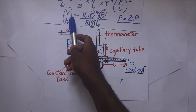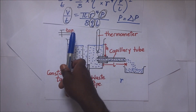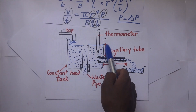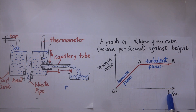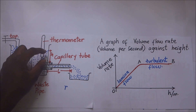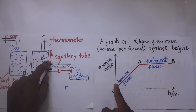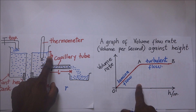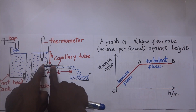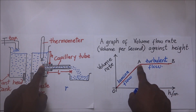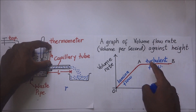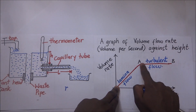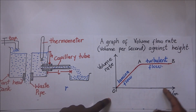After collecting V/T for different values of H, you plot a graph of volume flow rate against height H — that is, V/T on the y-axis against H on the x-axis. When H is low, the volume flow rate is low. As H increases, the flow rate increases. However, at some point the flow becomes turbulent due to too much pressure, and the volume flow rate becomes constant regardless of further increases in height.